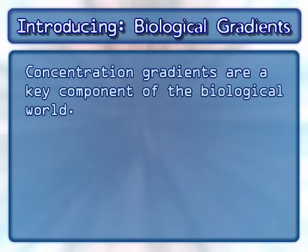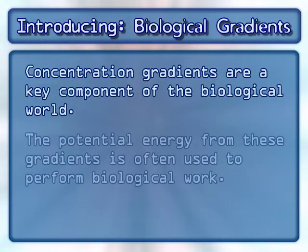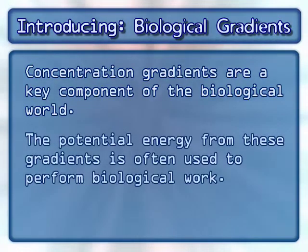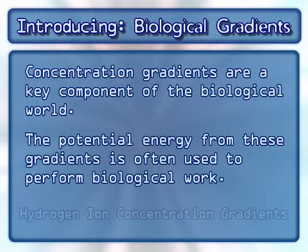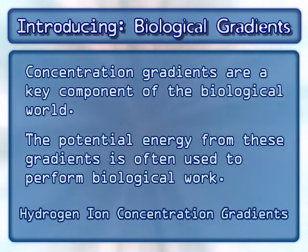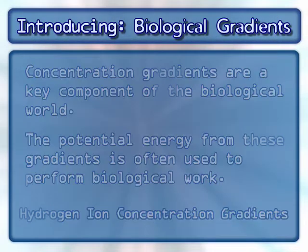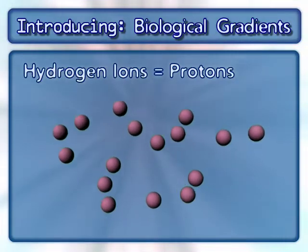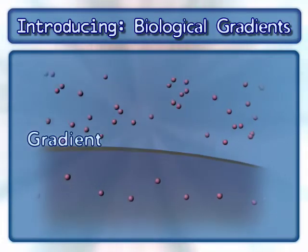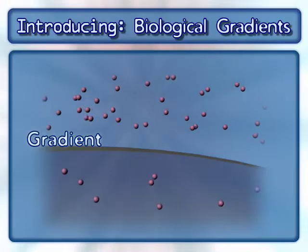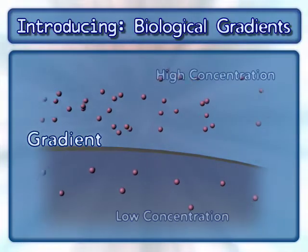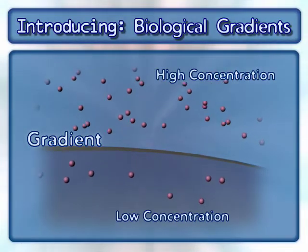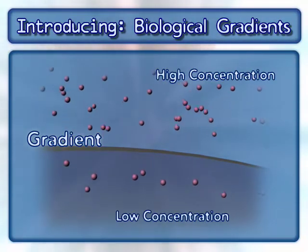Concentration gradients are a key component of the biological world. The potential energy from these gradients is often used to perform biological work. Here we will focus on hydrogen ion concentration gradients. Hydrogen ions are also known as protons. A gradient exists when there is a higher concentration of a molecule in one compartment compared to a neighboring compartment.